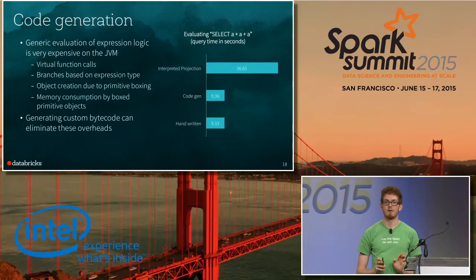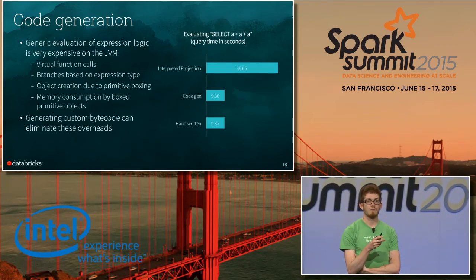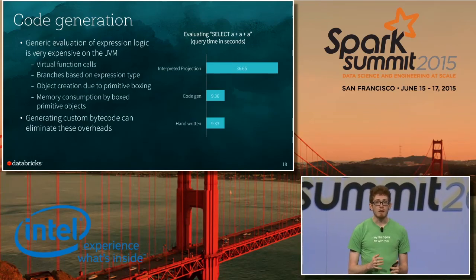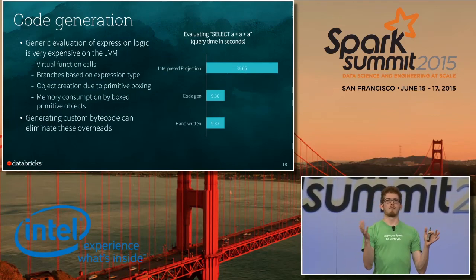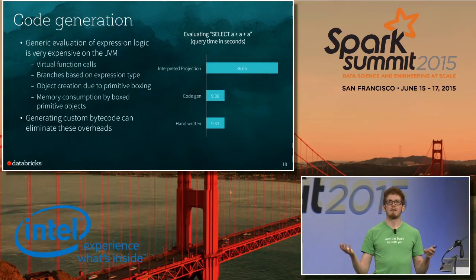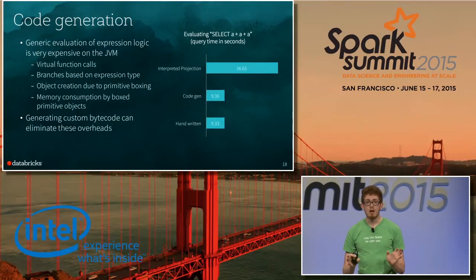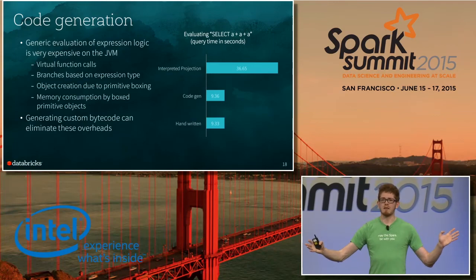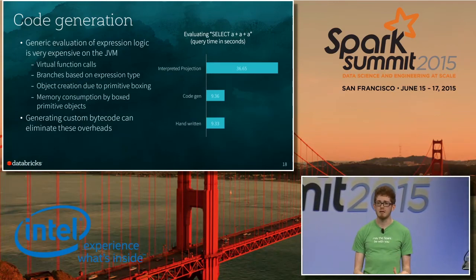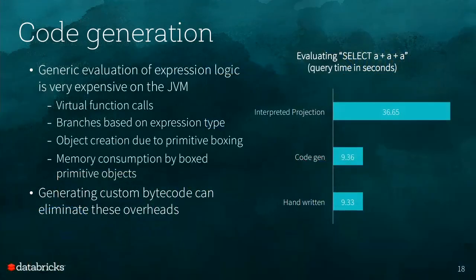The third piece of the Tungsten puzzle is code generation. In Spark SQL, consider a query with an expression like A plus A plus A. Evaluating this naively using an expression tree is very expensive due to JVM overheads — expensive function calls and lots of object creation along the way. If you generate custom bytecode by hand, you can collapse all of this down to very efficient code, much like you would write by hand, and see big performance gains. The bar chart here shows the cost of evaluating this simple select expression, and you can see that code generation basically matches the performance of writing the Java code for that expression by hand.